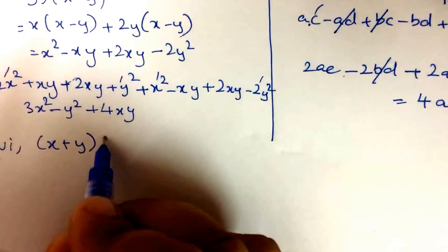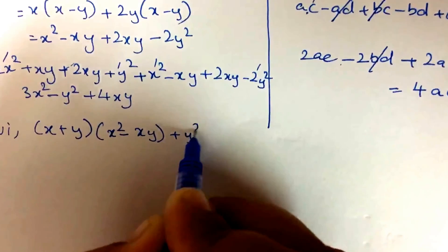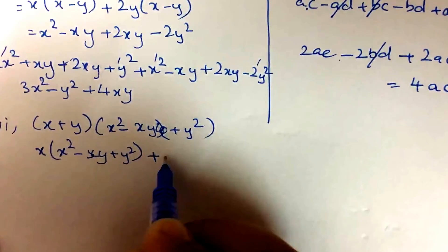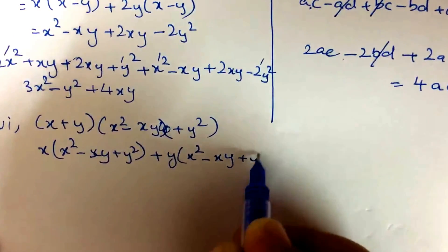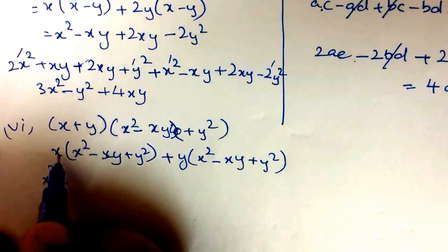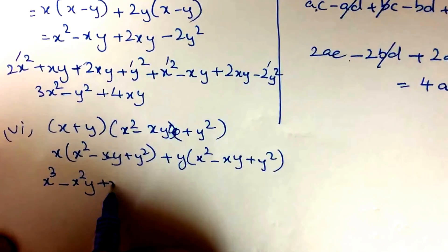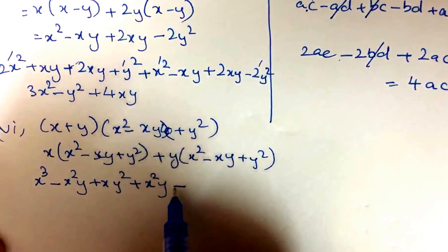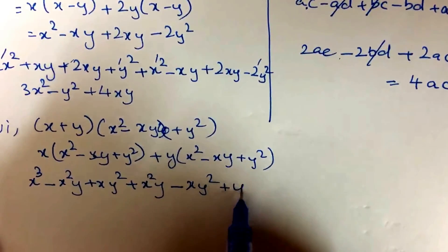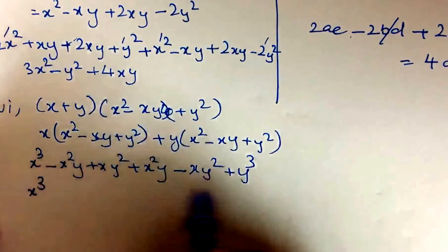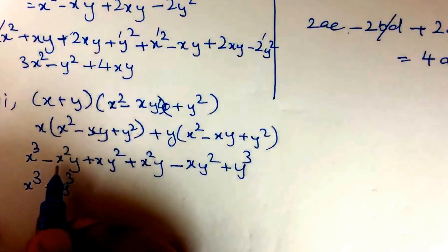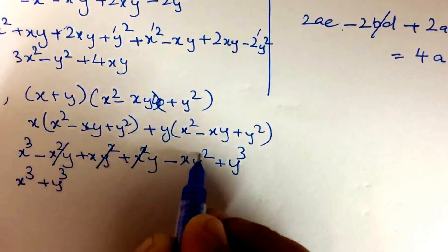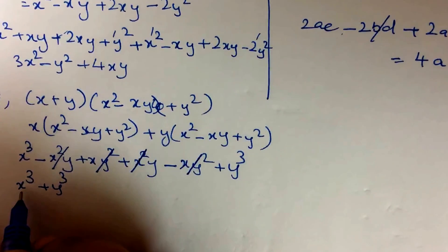Question number 6: (x + y)(x² - xy + y²) + y(x² - xy + y²). x into (x² - xy + y²) = x³ - x²y + xy². y into (x² - xy + y²) = x²y - xy² + y³. Collecting terms: x³ + y³; x²y - x²y cancel; xy² - xy² cancel. So the answer is x³ + y³.